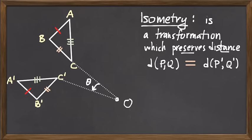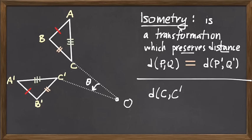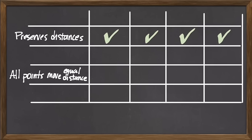We saw an example of an isometry that does not satisfy that all points are moving at equal distance. The distance from C to C' is not the same as the distance from B to B'. So this particular type of isometry — a rotation — does not move all points equal distances, and we can't check off that box.